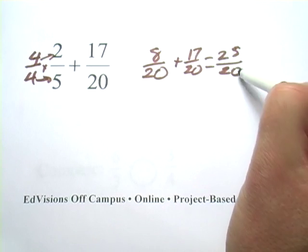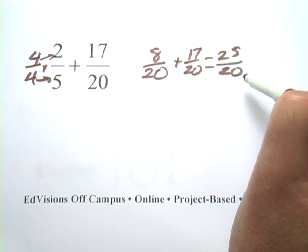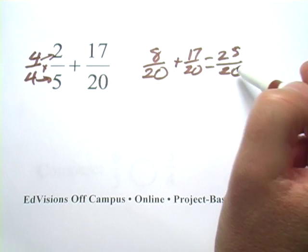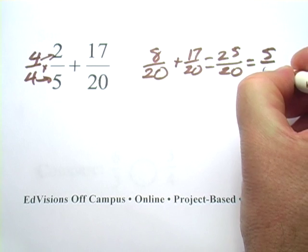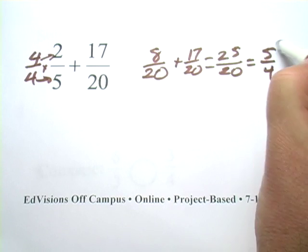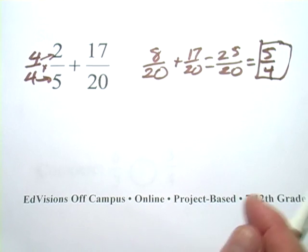And then let's see if I can simplify. It looks like both the top and the bottom have five as a common factor. If I divide twenty-five by five, I get five. If I divide twenty by five, I get four. So five fourths would be my answer there.